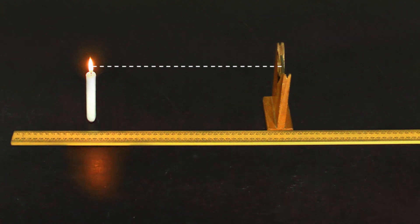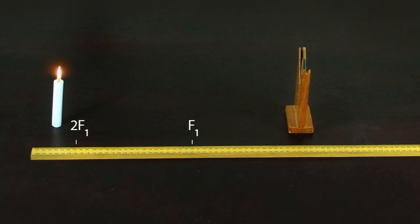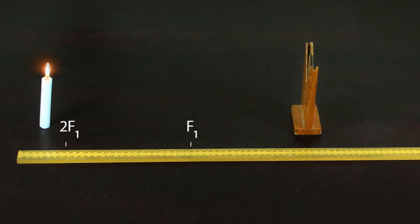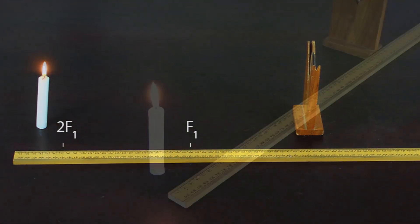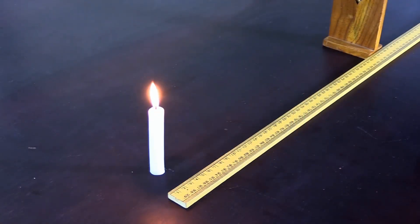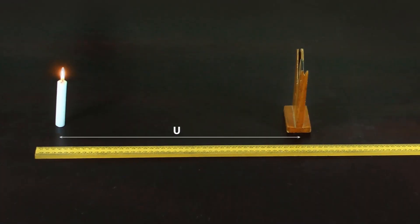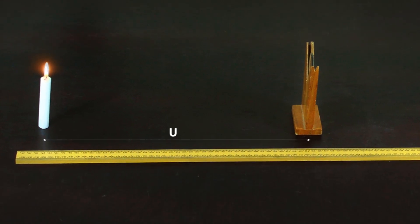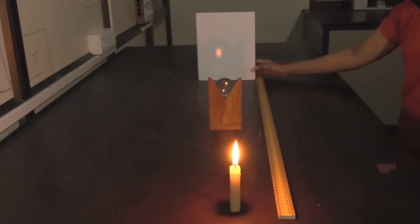Case 1: Object beyond 2F1. Choose the distance between the candle flame and optical center of the lens to be greater than twice the approximate focal length 2F obtained for the convex lens. Record this distance as object distance u in the observation table.